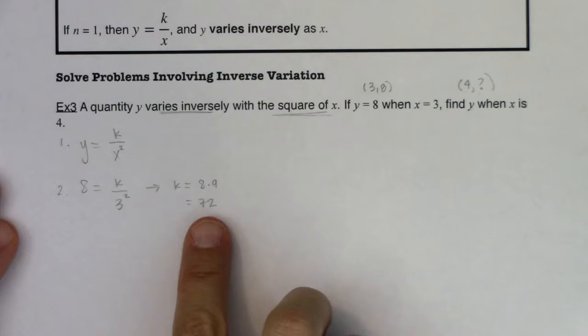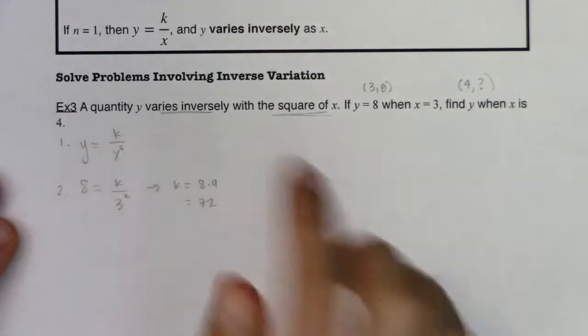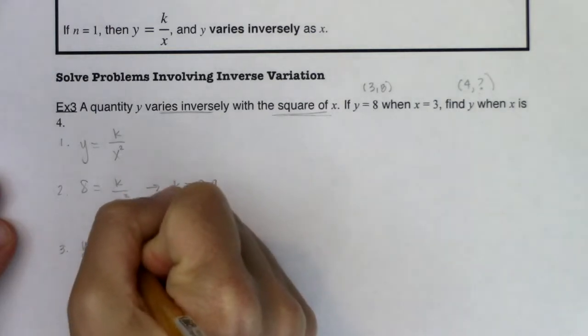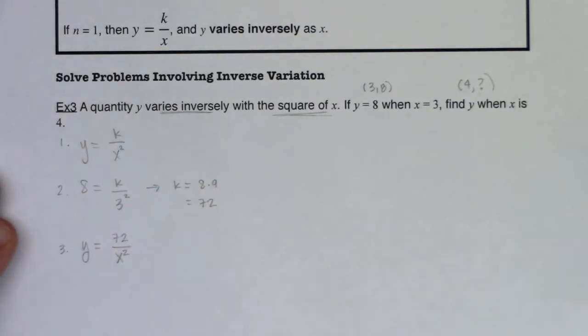Once you find your k, plug that into whatever equation you found in step one. So here I will say y is equal to 72 over x squared. Great.